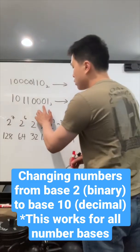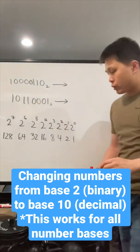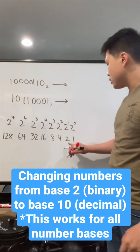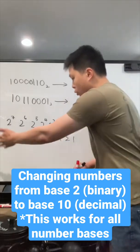These exponents correspond to the different place values. After that, we figure out what they are in terms of base 10. 2 to the 0 is just 1, 2 to the 1 is 2, and 2 to the second is 4, and so on and so forth.